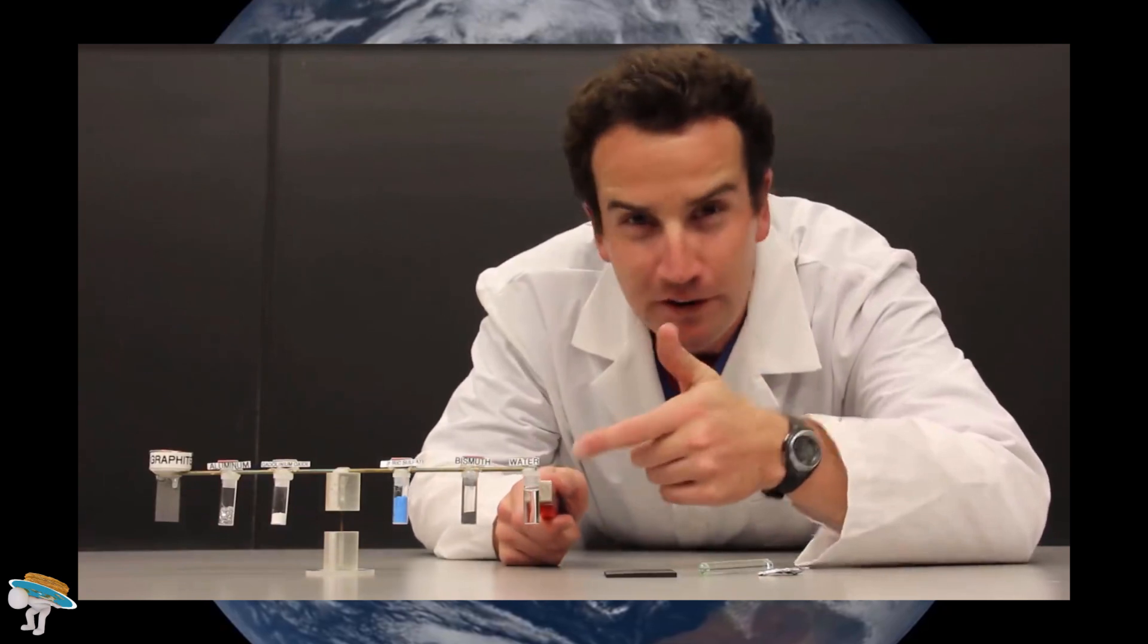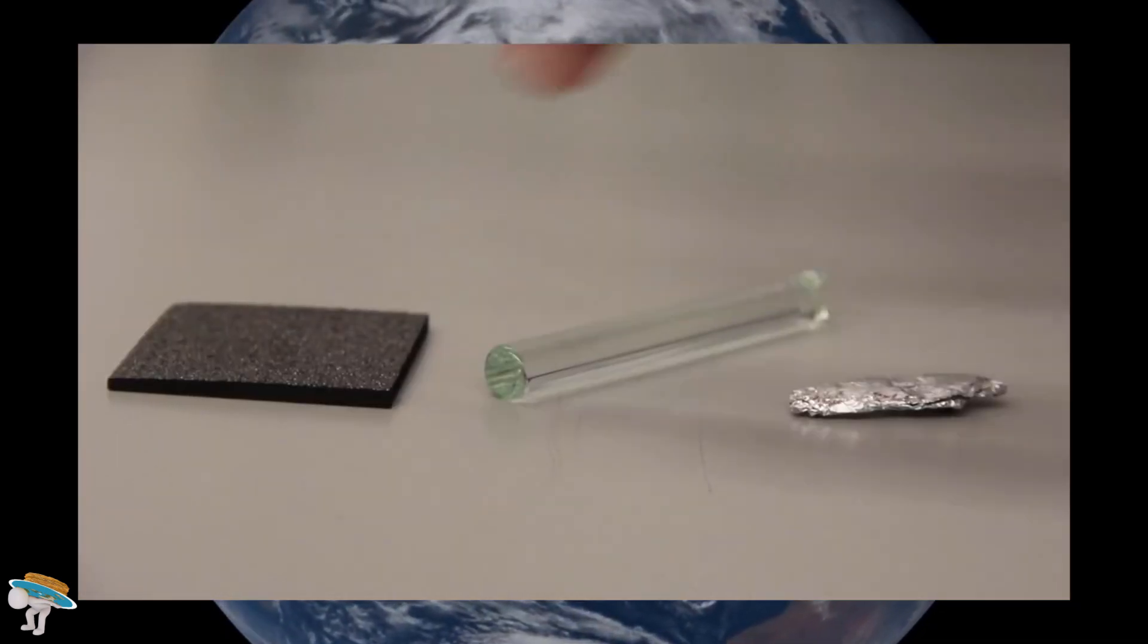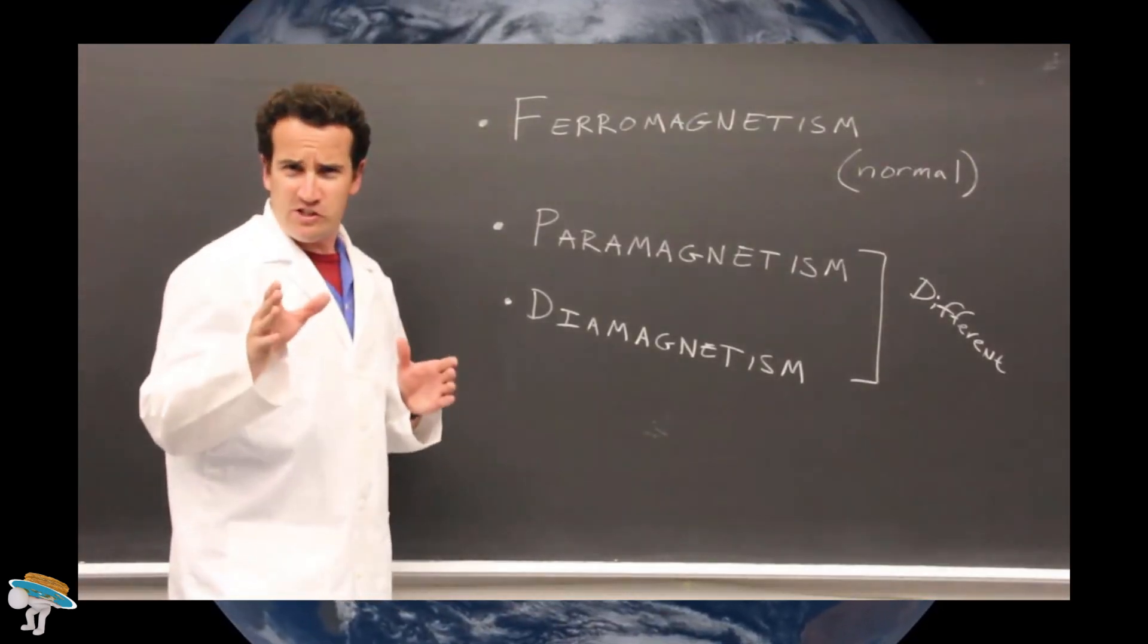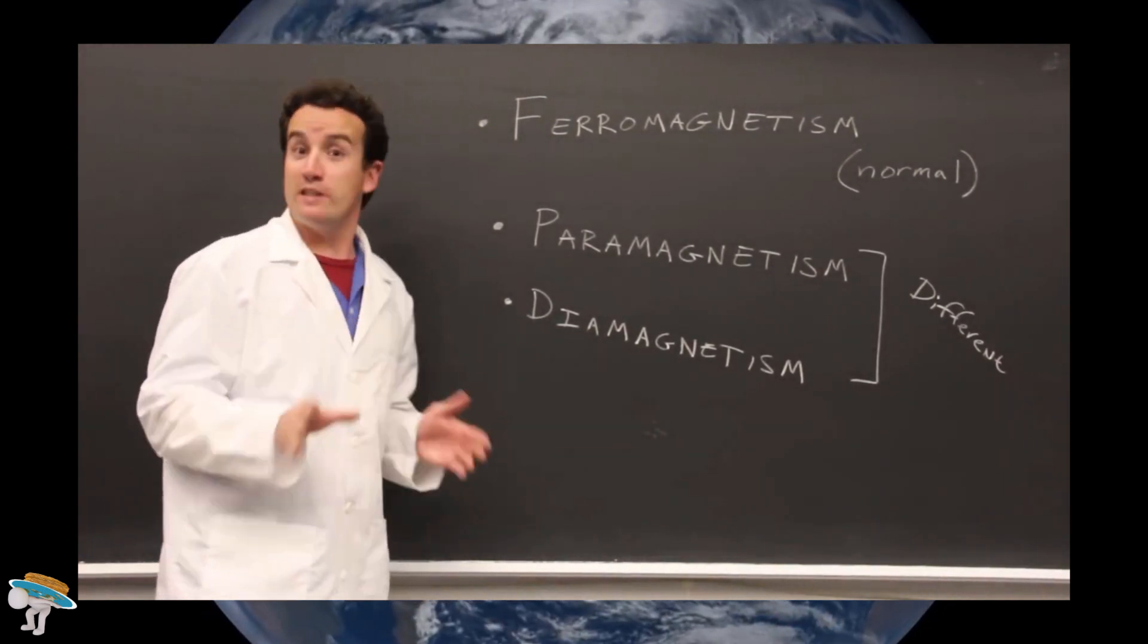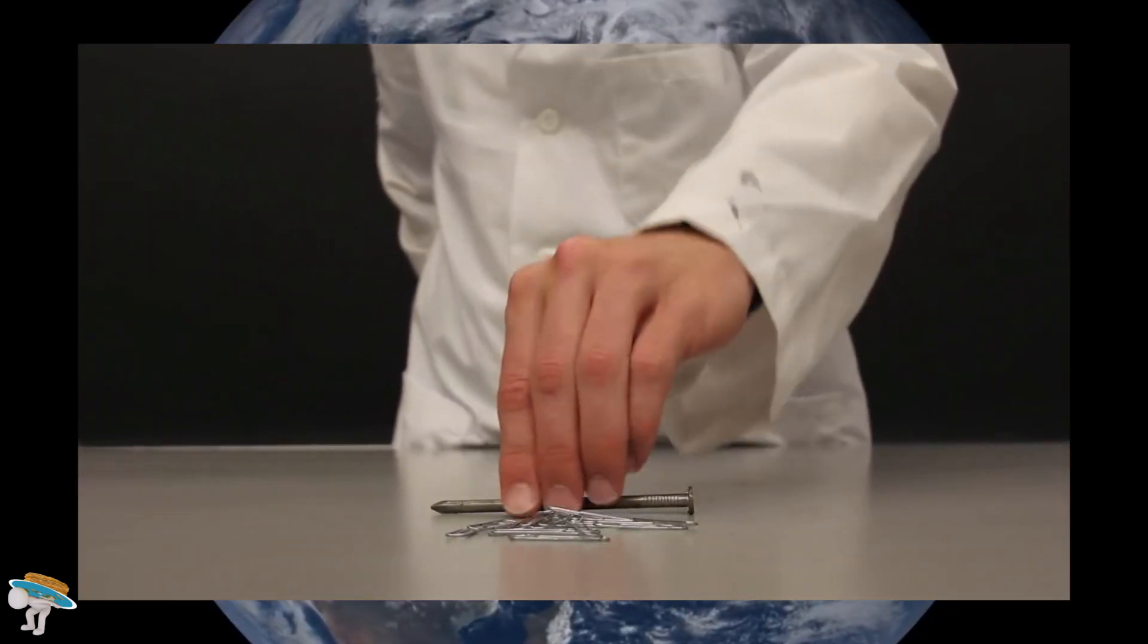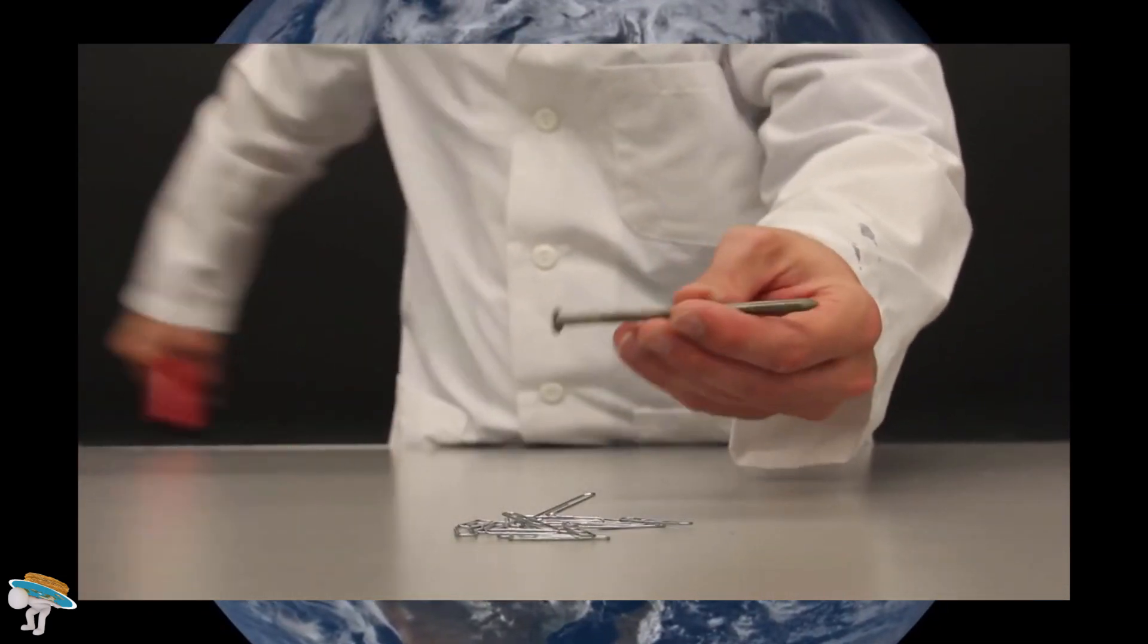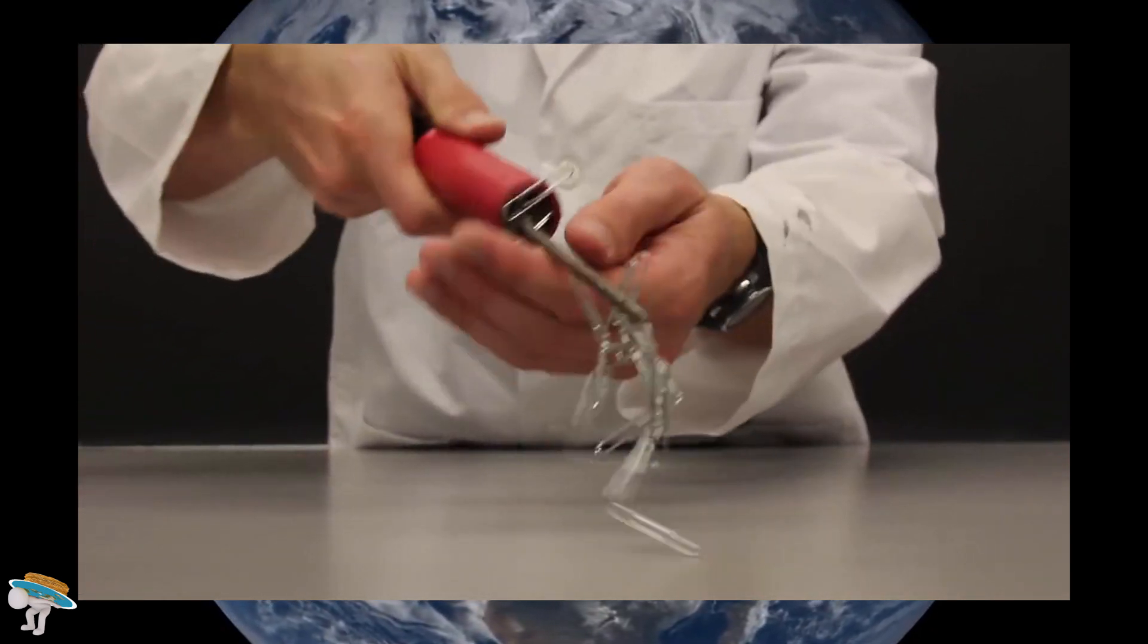You might not think of water as being magnetic, but it is. And so are graphite, aluminum, and glass. This is a new and different category of magnetism called either para- or diamagnetism, and it's different from the magnetism that you're used to. You're probably already familiar with ferromagnetism. Ferro means iron.